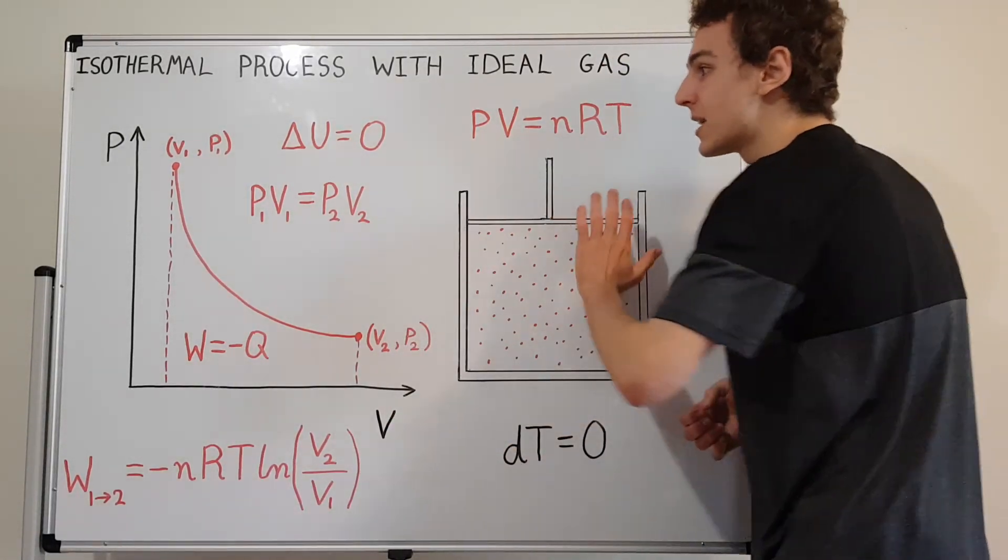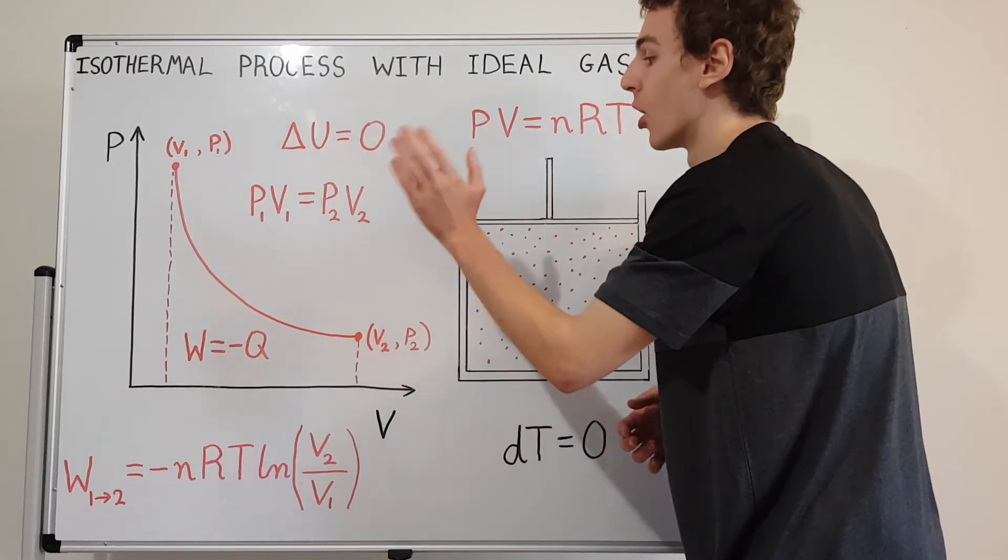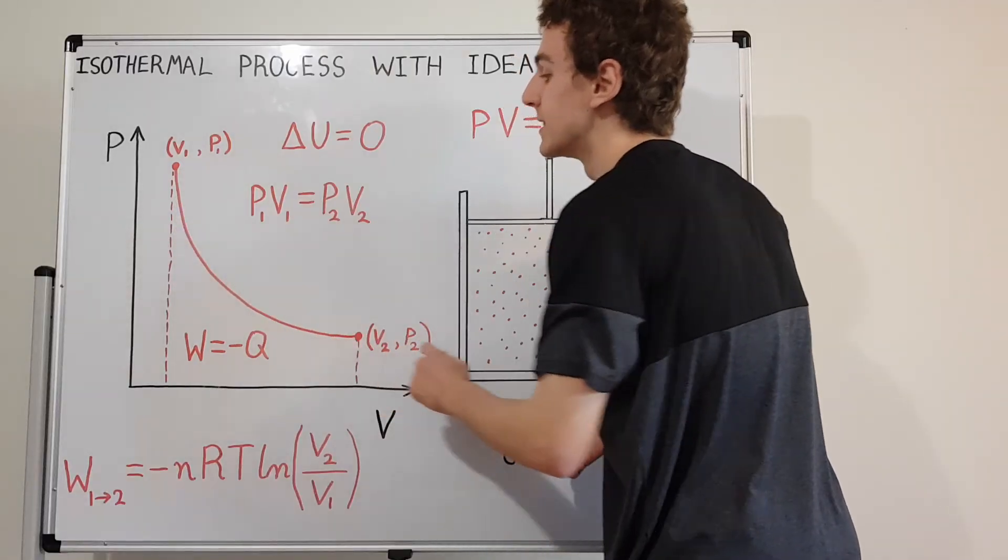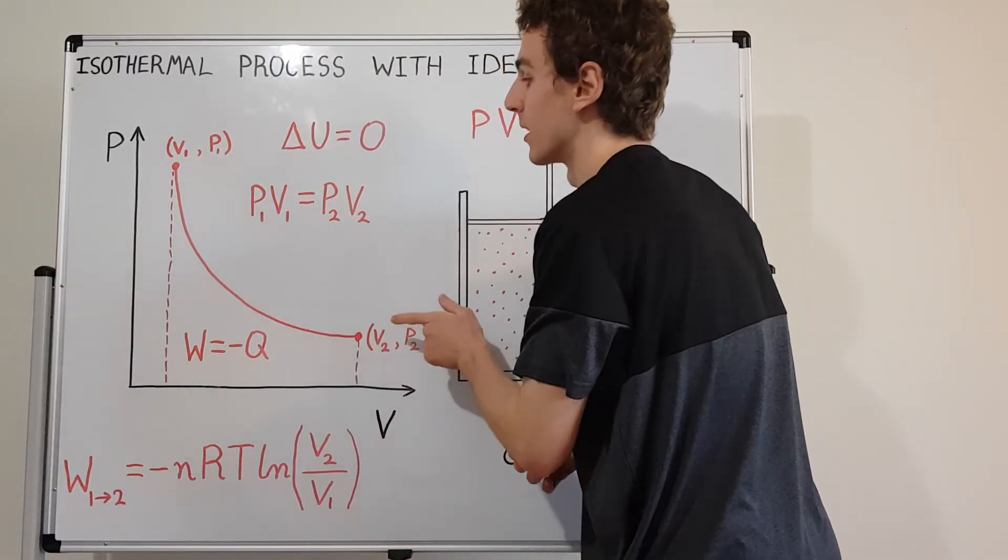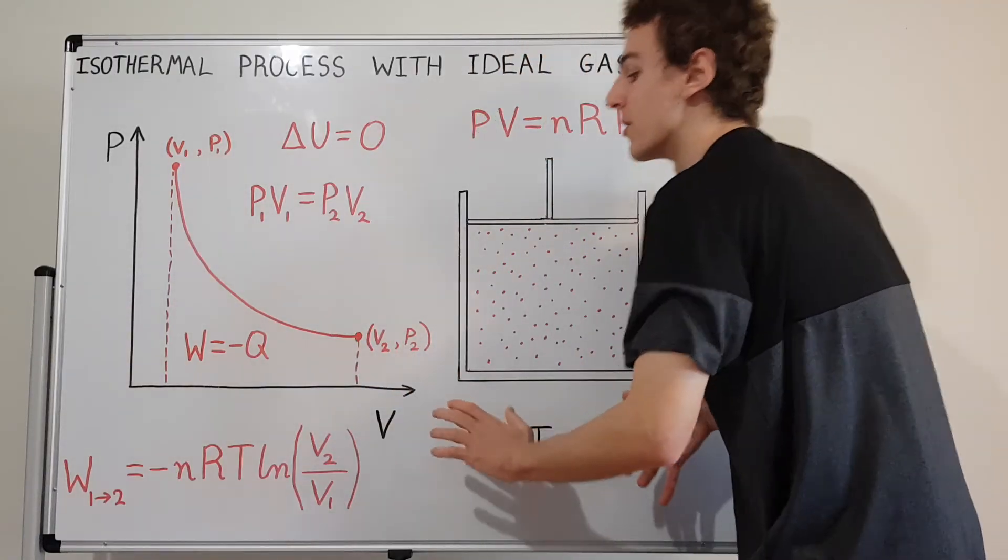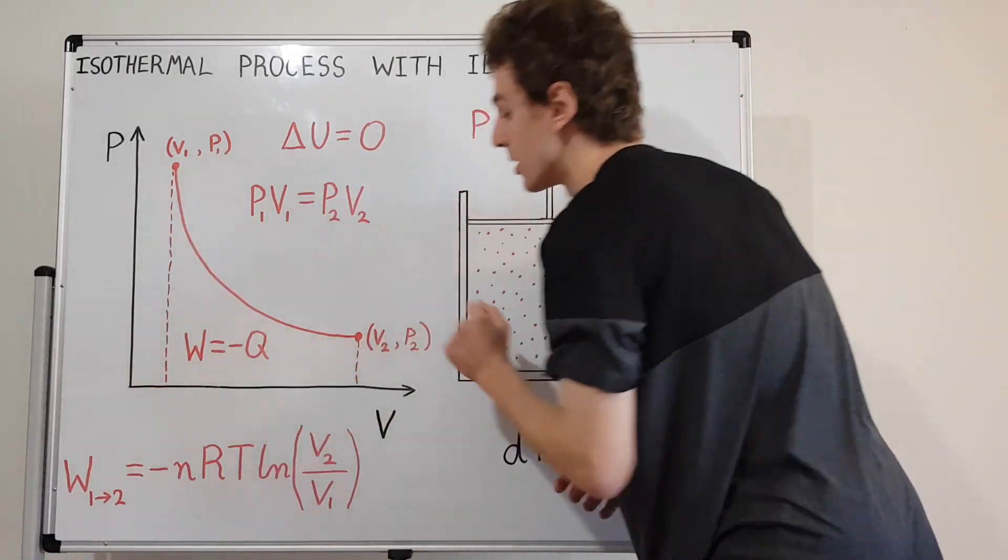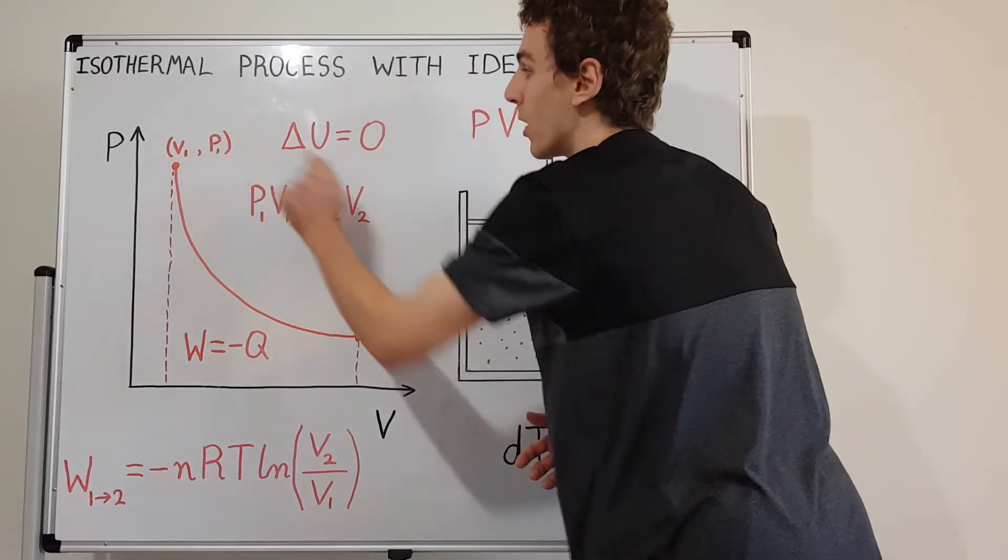So in this diagram over here, what we have is the PV representation of an isotherm. An isotherm is a rectangular hyperbola. Every point along here has the same temperature. So this guy over here, this is the work specifically from the point one to the point two. So where all these subscripts are two and all these subscripts are one.